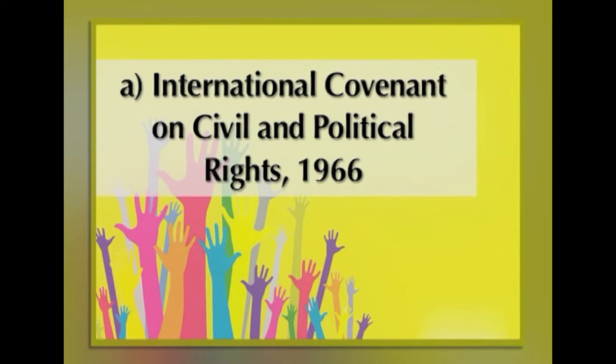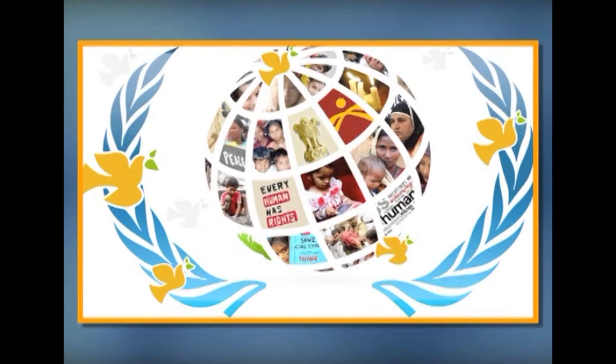Human rights of children under international law. All the human rights available to adults are equally available to children also. Sometimes the children may be entitled to more human rights than the adults in view of their vulnerability and the corresponding duty imposed on the parents, guardians and also the state. The International Covenant on Civil and Political Rights 1966 (ICCPR), one of the components of the International Bill of Human Rights, contains adequate provisions regarding the human rights of children.